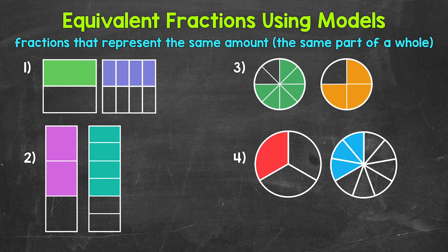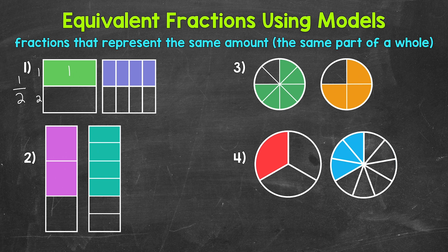Let's jump into number one, where we have two squares that are the same size. But each square is divided into a different number of equal parts. We can see that the same amount of each square is shaded in. These squares represent equivalent fractions, so let's write these fractions out. The square on the left was divided into two equal parts, so two is our denominator. One of the parts is shaded in, so one is our numerator. One half of the square is shaded, so this square is representing one half.